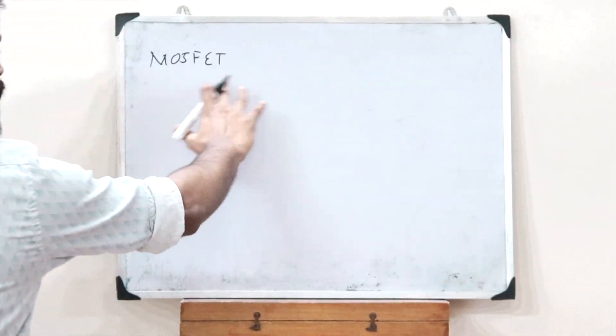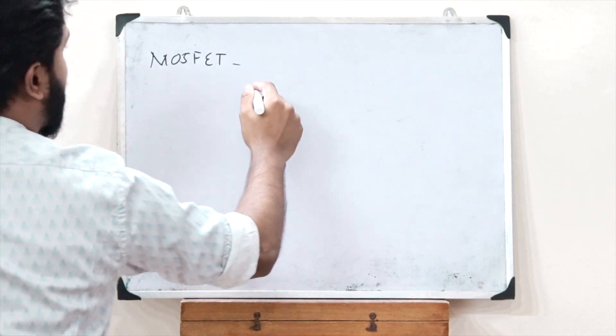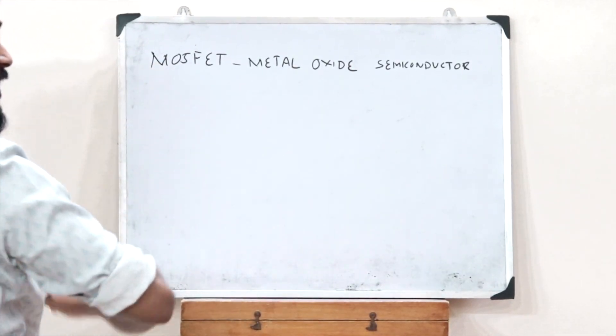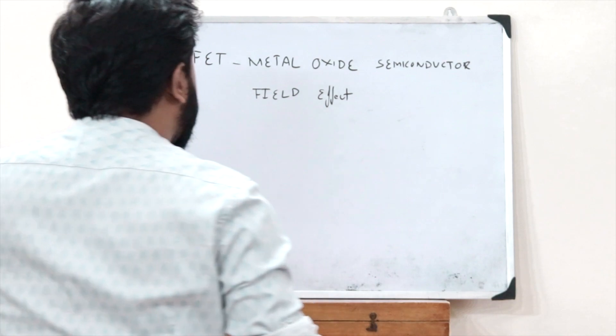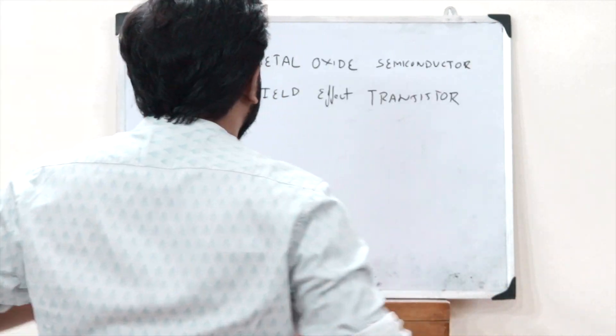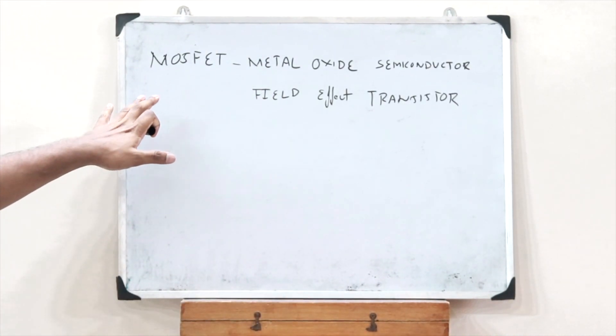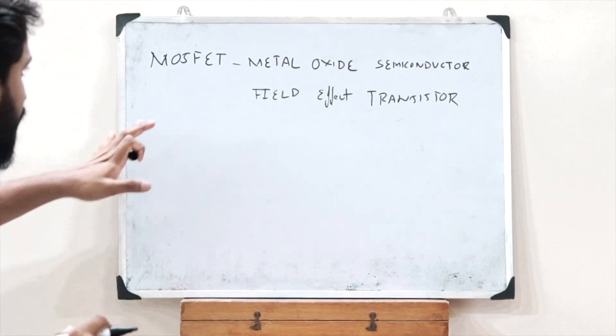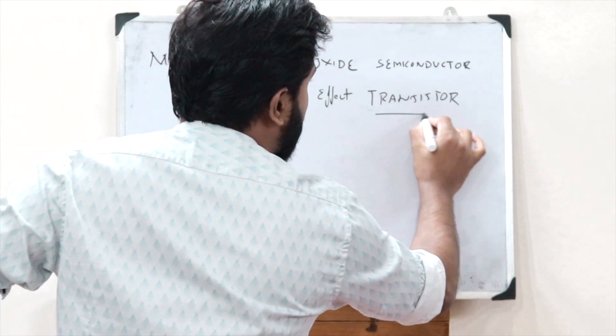We know what a normal MOSFET stands for. A MOSFET is the abbreviation given for a Metal Oxide Semiconductor Field Effect Transistor. MOSFET: M for Metal, O for Oxide, S for Semiconductor, F for Field, E for Effect, and T for Transistor. From the expansion of the word MOSFET, we should understand that a MOSFET is also a type of transistor.